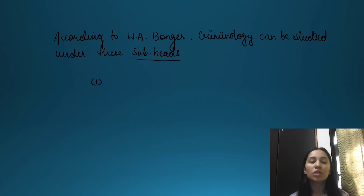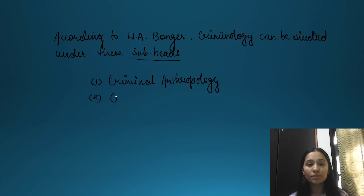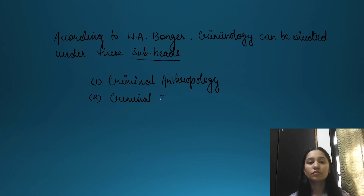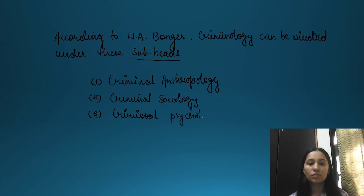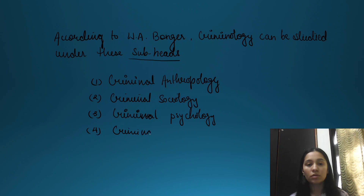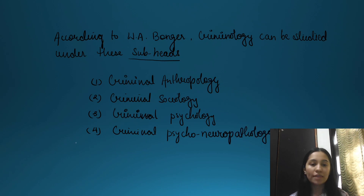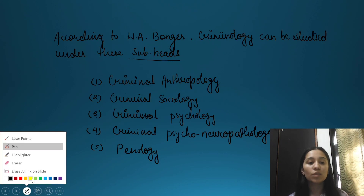According to WA Bonger, the subheads are: first, criminal anthropology; second, criminal sociology; third, criminal psychology; fourth, criminal psychoneuropathology; and fifth, penology.